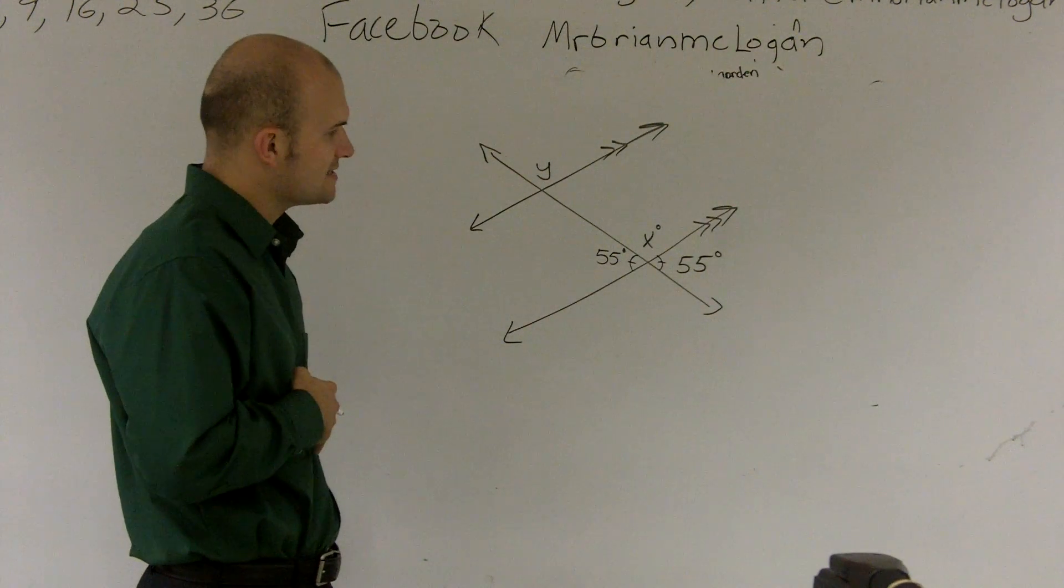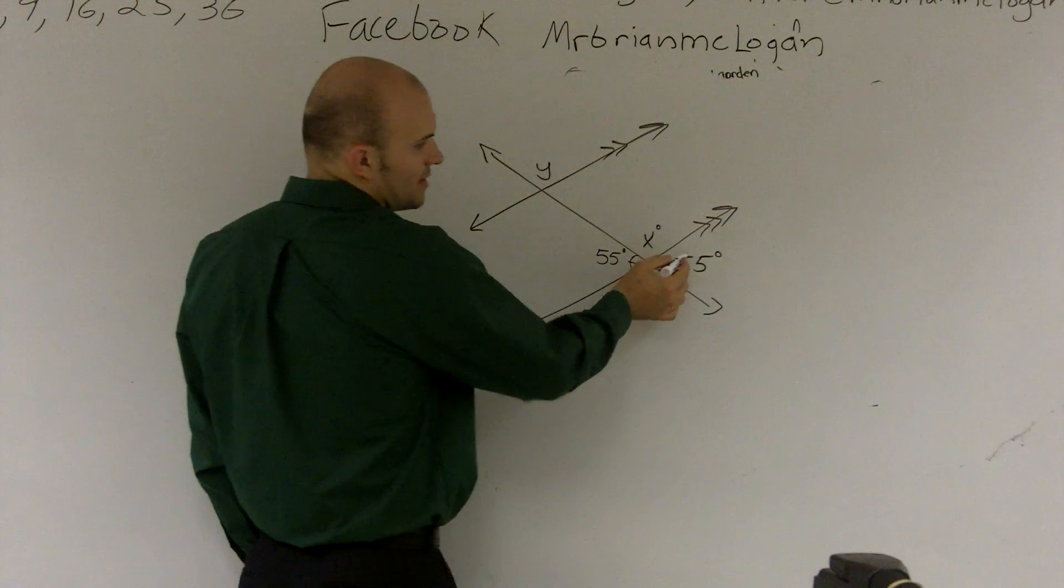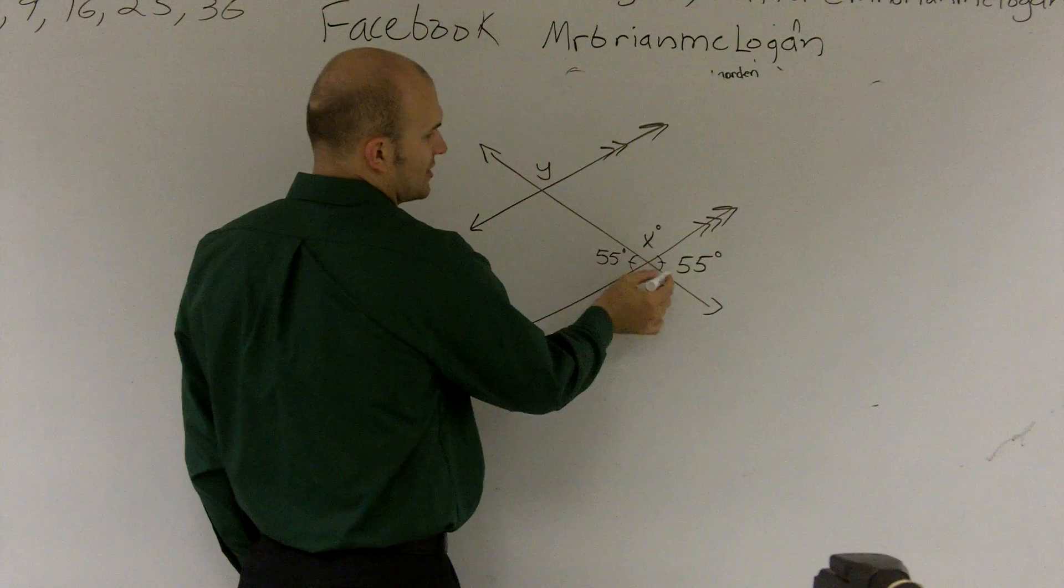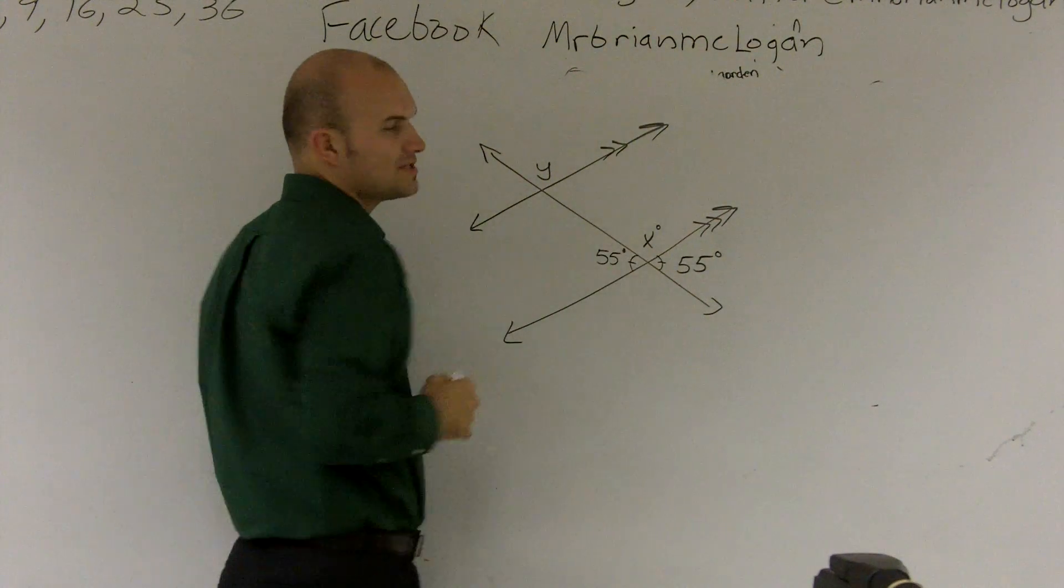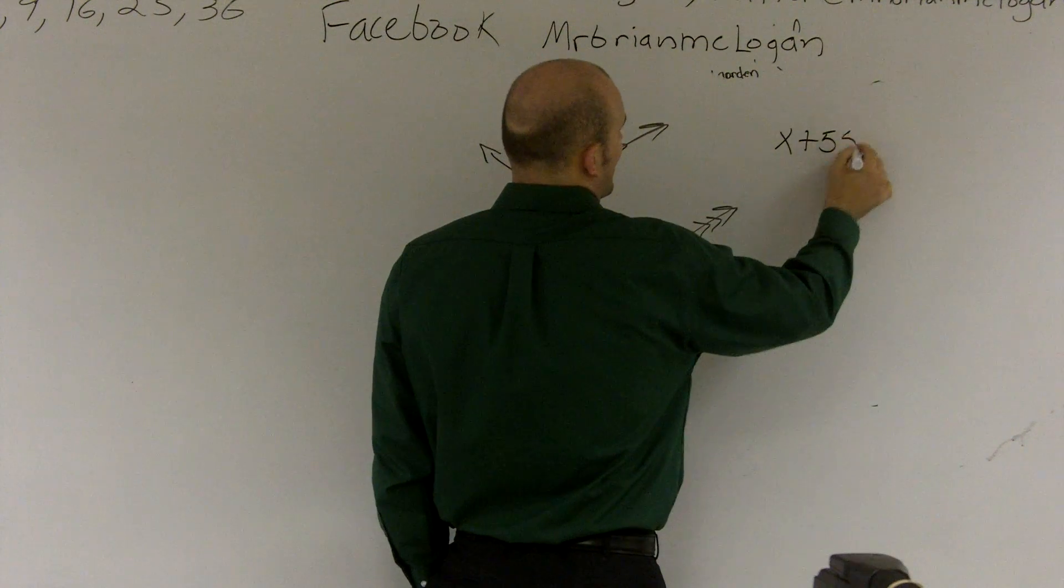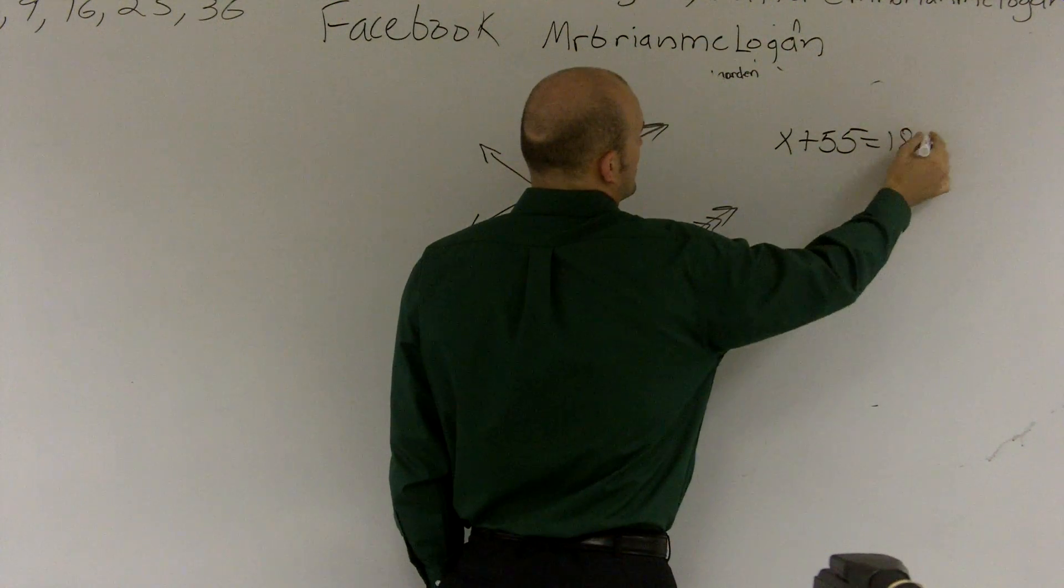The other thing we also learned is that two angles that make up a straight line add up to 180 degrees. So I can look at this and say x and 55, those add to 180 degrees. So I can say x plus 55 equals 180.